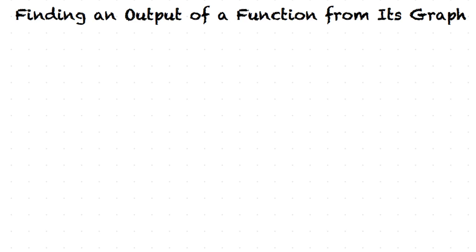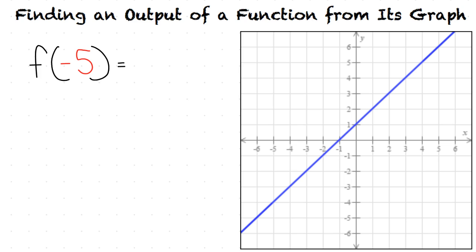This video will cover the topic of finding an output of a function from its graph. Our first example will be finding the value of f of negative 5 based on our graph. Would we find the answer by first looking at the x value that the problem provides us with? Yes, that is correct.